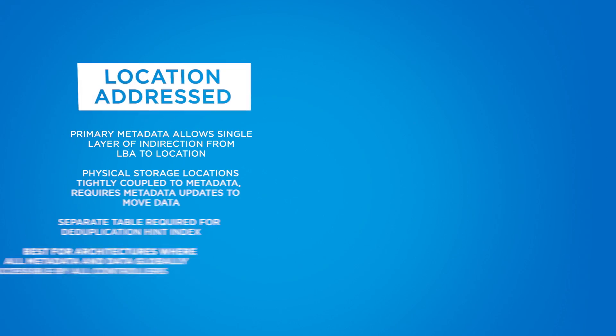In summary, there are two ways that this problem has been solved. The first is location addressing. In this case, the primary metadata allows for a single layer of redirection from the LBA directly to the physical location on disk. The storage and physical storage locations are very tightly coupled to the metadata, and any move of data requires a metadata update. Also, a separate table is required to handle the hint index for all deduplication functions. This is best for architectures where all of the metadata and data are globally accessible by all controllers, which is something Pure does very well.